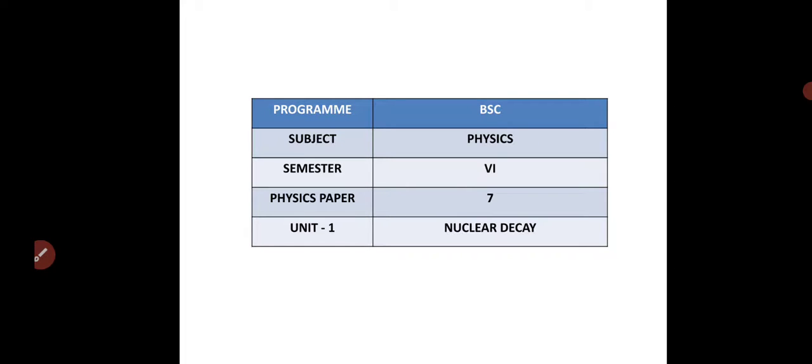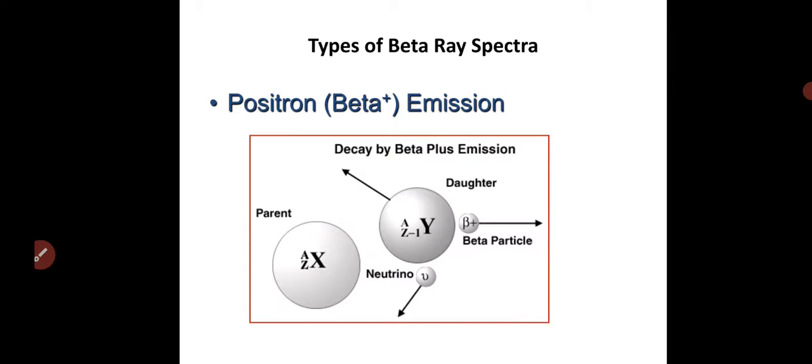First we move on to positron emission. There are two charge particles. One is negative, another one is positive. Here beta plus means positive charge only. Beta minus means negative charge.